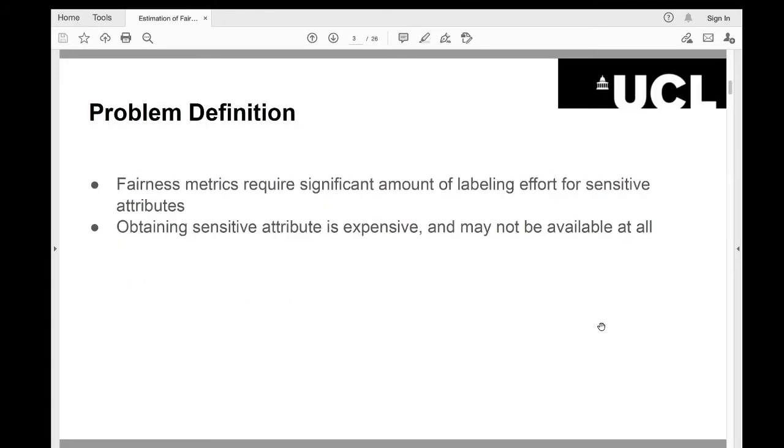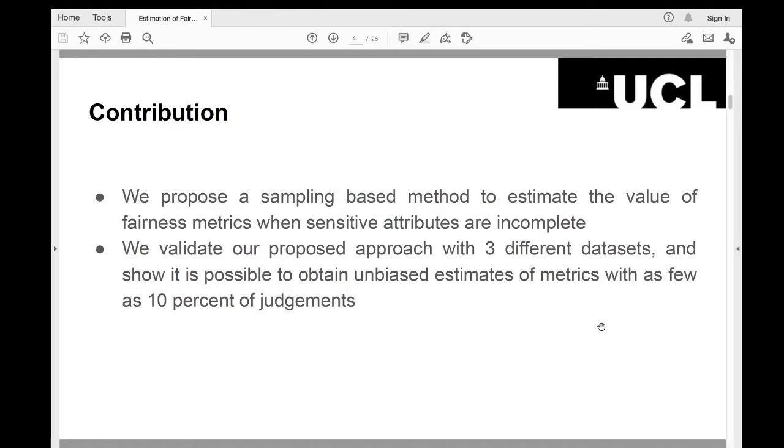But these fairness metrics require significant amount of labeling effort for sensitive attributes. Moreover, obtaining sensitive attributes is expensive, and sometimes these sensitive attributes may not be available at all. In light of these, we propose a sampling-based method to estimate the value of fairness metrics when sensitive attributes are incomplete. We validate our proposed approach with three different datasets and show it is possible to obtain unbiased estimates of metrics with as few as 10 percent of judgments.